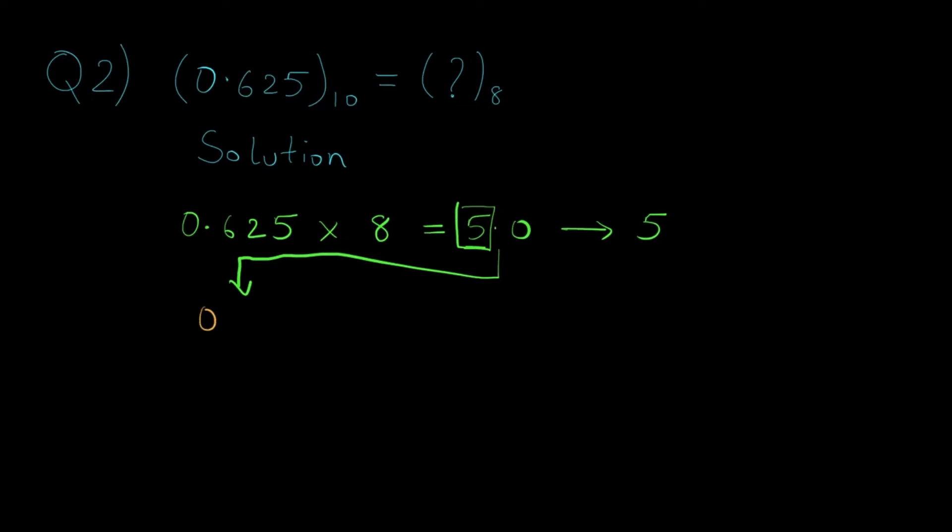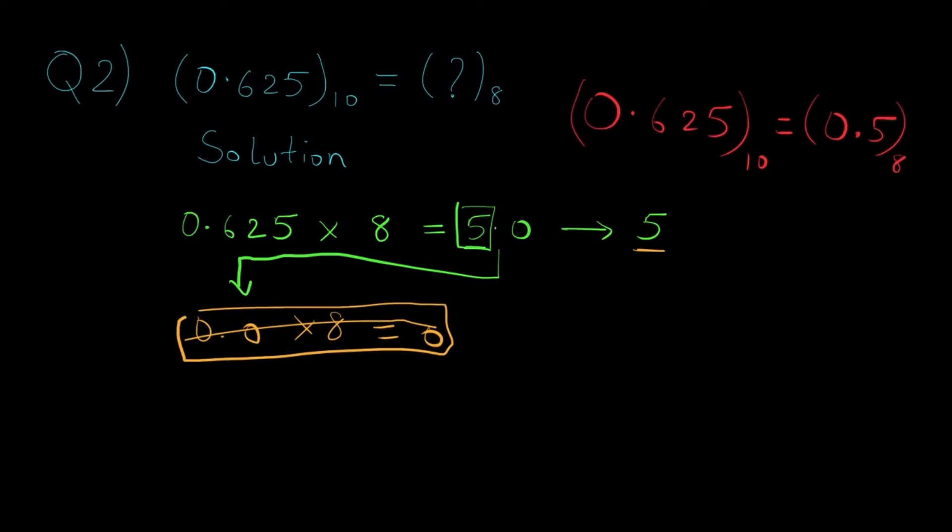So once we ignore this we have 0.0 for the next iteration. Now you know 0.0 into 8 will again give us the value 0. So this will infinitely go on so we have to stop over here and we have also got our answer. 0.625 in decimal is equal to 0.5 in octal.